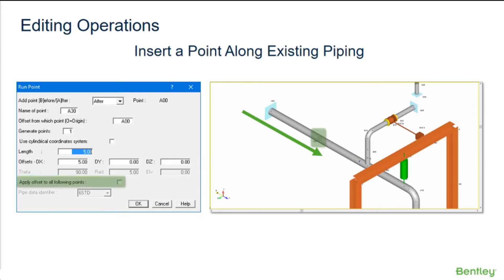If the user wishes to insert additional piping along an existing run, the apply offset to all following points option must be checked on, and then the length of the desired additional piping should be entered in the length field.